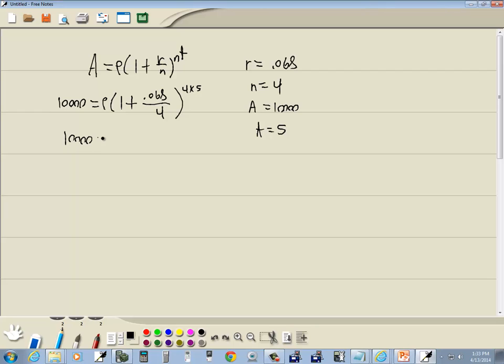Well we got 10,000 equals P, 1 plus .068 divided by 4, 4 times 5 is 20.